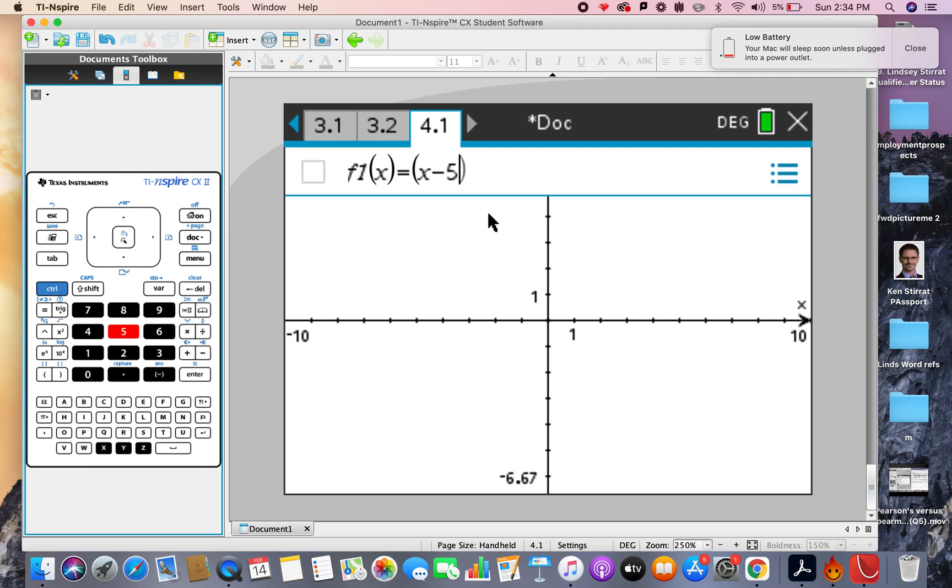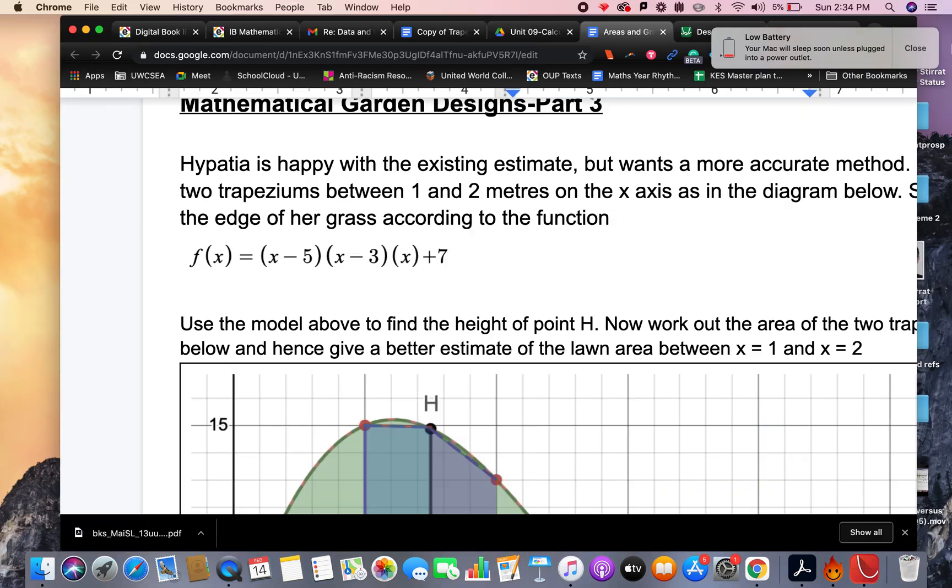Open bracket, x minus 5, make sure you do the multiplication sign, just so it recognizes that you're multiplying, multiplied by x minus 3, then x plus 7, we press return, and of course we've got this particular picture here. We'd probably like to see the same sort of picture that we saw on the question.